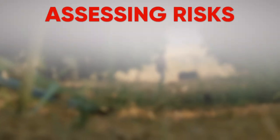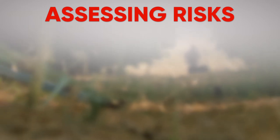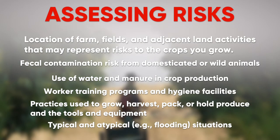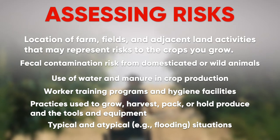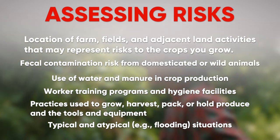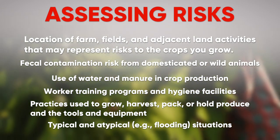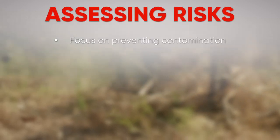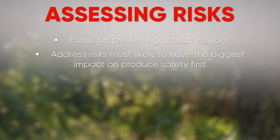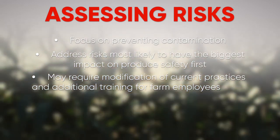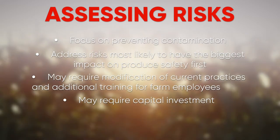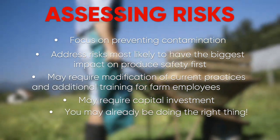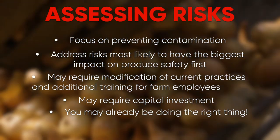Implement corrective actions to fix a problem identified through monitoring and prevent it from occurring again. Record keeping is very useful in making sure tasks are being completed and to visualize trends over time. Assessing food safety risk requires a systematic review of the farm location, practices, conditions, and typical situations to determine where contamination could most easily occur. Each farm has its own unique risks, so growers should focus on learning how they can assess these risks to evaluate their own farm. Growers should prioritize those risks that will have the biggest impact on produce safety and choose their investments wisely.